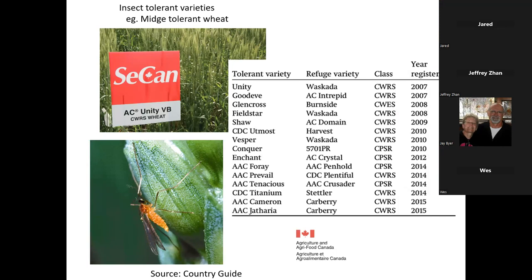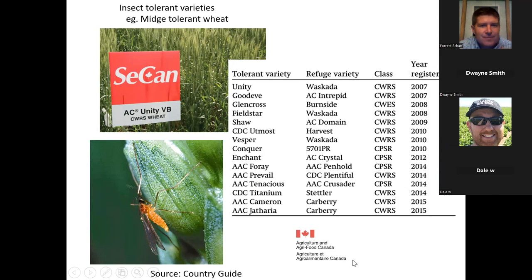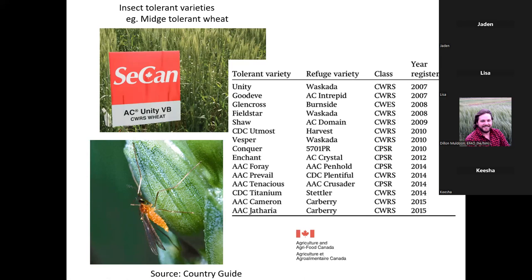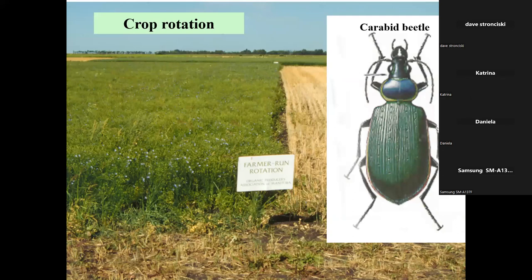Midge tolerance was done by Agriculture and Agri-Food Canada; the first variety was released in 2007. Jetheria, one of the more recent varieties, was released in 2015. The way this works is that a small portion of the seed in the seed lot is actually a midge-susceptible variety - in the case of Jetheria, there's a little bit of carbary - so that we don't build up tolerance to the midge in the Jetheria. It's a good strategy that many of you will be very familiar with.